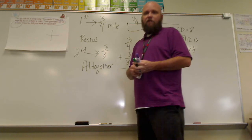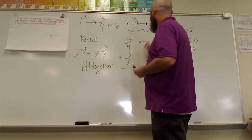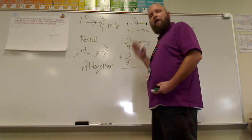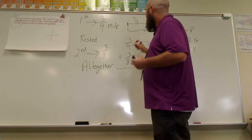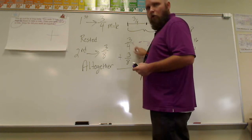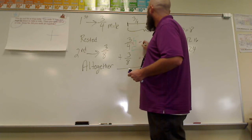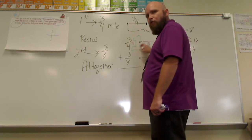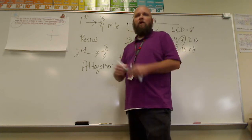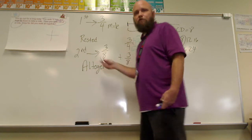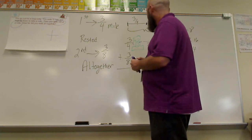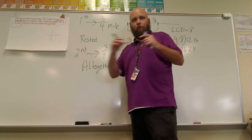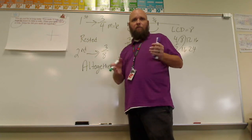We take that least common denominator and make equivalent fractions for each of our addends to find the total sum. We're not changing the value — we're going from three-fourths to something over eight. To go from four to eight, we multiply by two over two, which equals one. Multiplying straight across: four times two is eight, three times two is six. So three-fourths and six-eighths are equivalent. You can verify this with fraction strips — they should line up exactly the same.